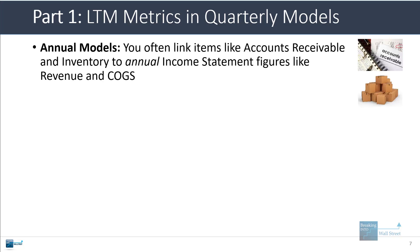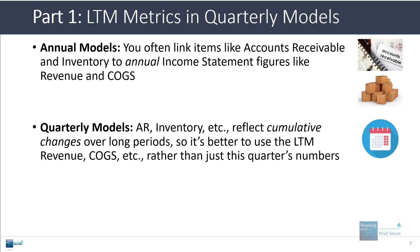In annual models, you often link items like accounts receivable and inventory on the balance sheet to income statement metrics like revenue and cost of goods sold, because there's a direct link. With inventory, anything the company purchases and eventually sells shows up within COGS when it's sold and delivered. In quarterly models, items like AR and inventory reflect cumulative changes over long periods, so it's better to use the LTM versions of revenue and COGS rather than just this quarter's numbers.